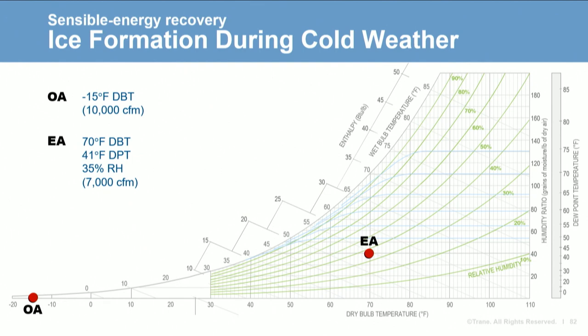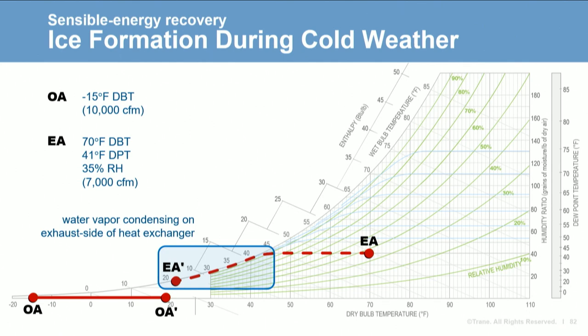During very cold weather, as more heat is removed from the exhaust airstream and transferred to the outdoor air, the exhaust air can cool to the point where it reaches a saturated condition. In a sensible energy recovery device where exhaust air is at 70°F dry bulb and a 41-degree dew point — equating to 35% relative humidity — as the exhaust air cools below 41°F dry bulb, it reaches saturation and water vapor begins to condense on the exhaust side of the device. If the surface temperature is below 32°F, this condensate will freeze, eventually blocking airflow and possibly damaging the device.